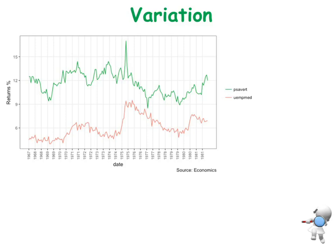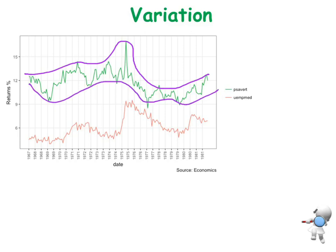What about variation? I draw my lines at the top and at the bottom, and I want to ask: are those lines reasonably parallel? There are a couple of spots where it's a little bit wider or narrower, but we certainly don't have that fan or funnel effect. So for this one, it's not perfect, but I would say it's reasonably constant — a little bit of variation, but not too bad.